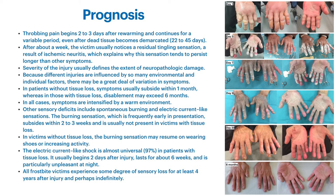Because different injuries are influenced by so many environmental and individual factors, there may be great variation in symptoms. In that core site center you may have third-degree frostbite, where on the very periphery you only have first degree — it is a spectrum. In patients without tissue loss, symptoms usually subside in about a month. Those with tissue loss may have disablement exceeding even six months. It all depends on how deep the freeze went, how much tissue death occurred, and how the indirect cellular damage from thrombosis formation progressed.